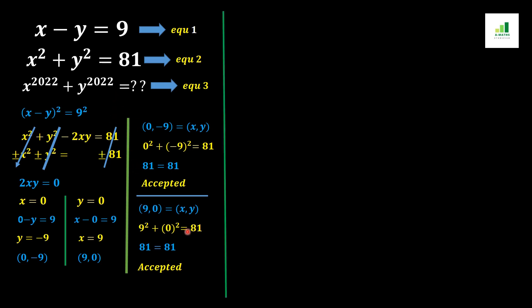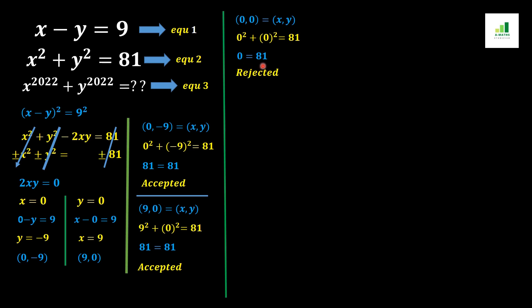I also check the case x equals 0 and y equals 0 in equation 2: 0 squared plus 0 squared equals 81 simplifies to 0 equals 81. Both sides are not equal, so this is a rejectable condition and (0, 0) is discarded.